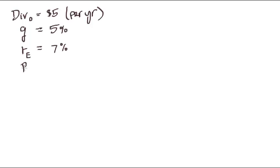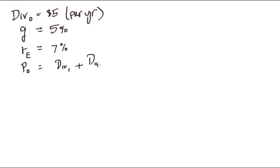Today's price is P0. For ExxonMobil, the price today is approximately $94. Another way to look at today's price is as the present value of all future dividends: div1 at the end of the first year, plus div2, and so on up to some really distant time into the future.